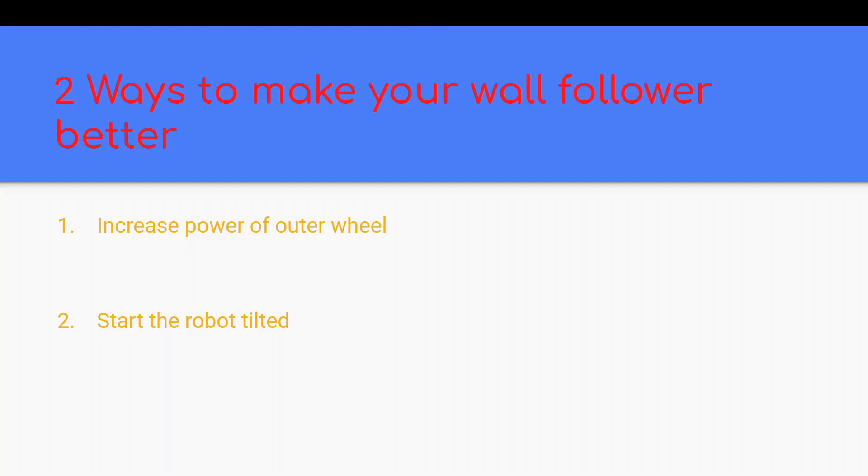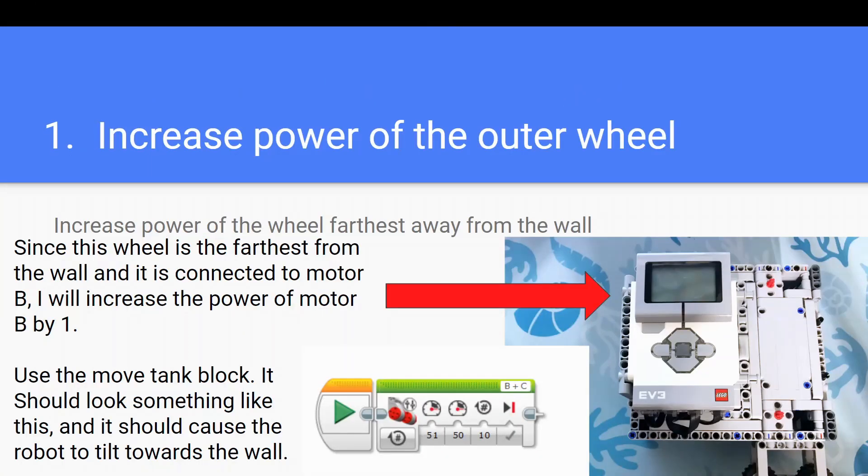There are two things you can do to make your wall follower more effective. First, in the program, you can slightly increase the power of the motor that is furthest away from the wall. You can do this using the move tank block, which allows you to set different power values for two different motors.